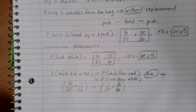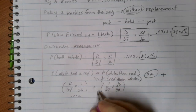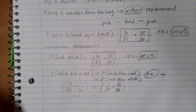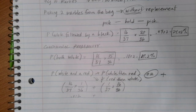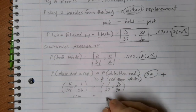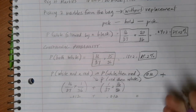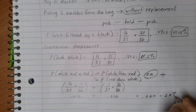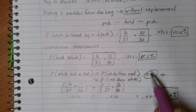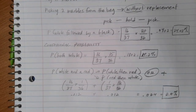If I do 16 over 37 times 1 over 36, I get 0.012. When I do 1 over 37 times 16 over 36, I end up with 0.012 as well. Adding those two probabilities together, I end up with 0.024, or a 2.4% chance that if I pick two marbles without replacing them, when I'm done I'll have a white marble and a red marble in my possession.